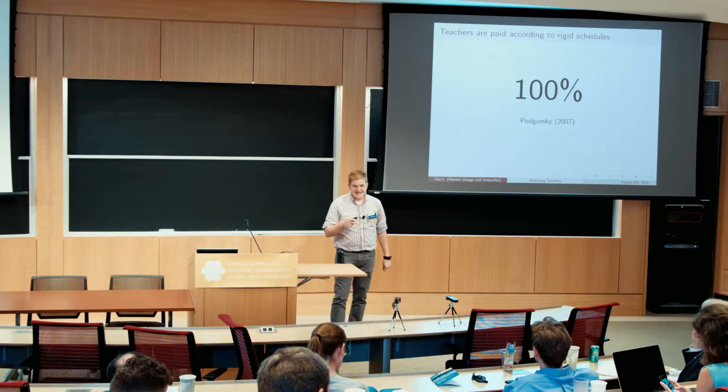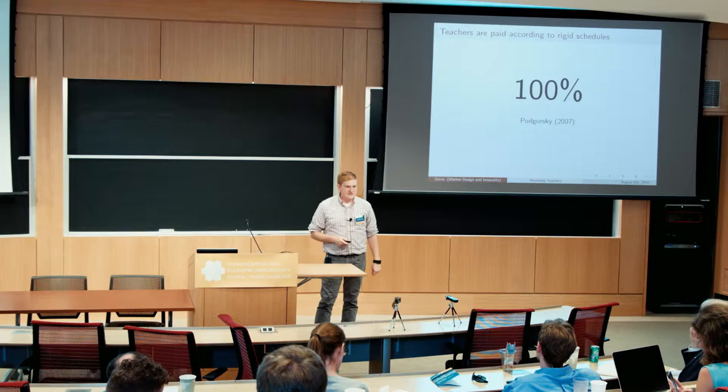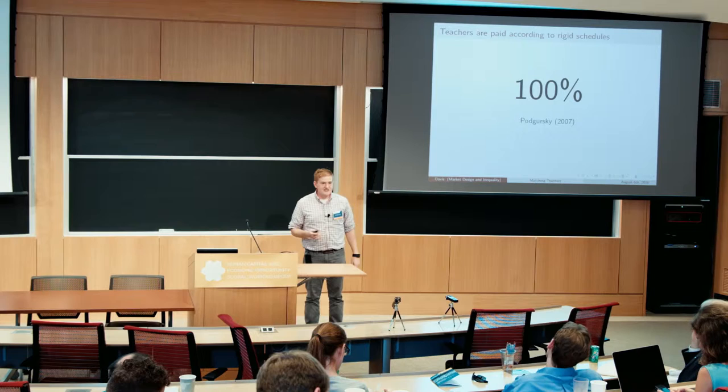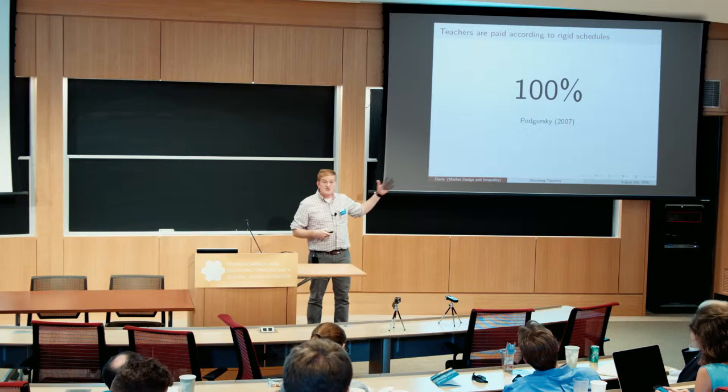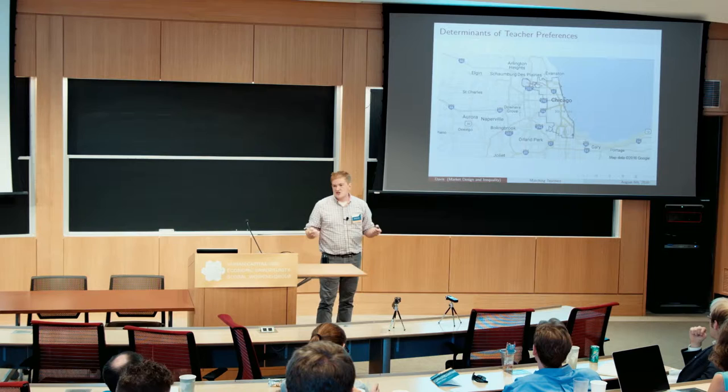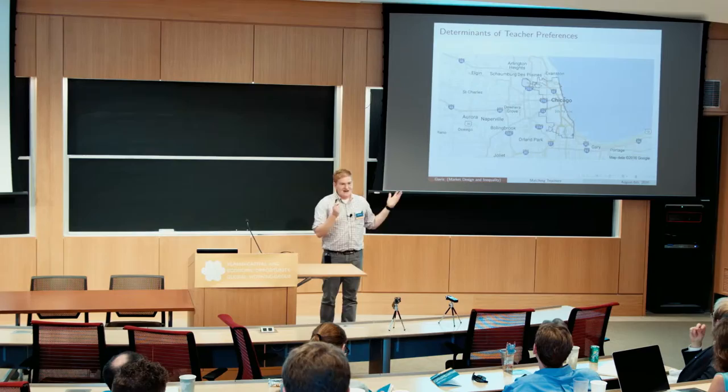If you go to a district like New Trier or Winnetka they'll pay more, but teaching there might be a 45-minute drive versus a 10-minute drive to downtown Chicago. So if teachers' preferences aren't determined by salary, what are they determined by? The best evidence suggests two key factors: first, geography — teachers tend to want to teach close to where they live and in nice neighborhoods; second, student characteristics — if you're going to be paid the same, most people prefer an easier job, so teachers tend to prefer schools with more advantaged students.